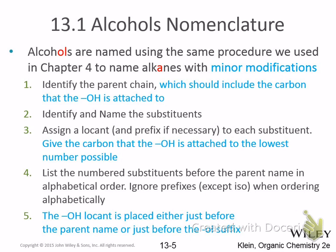The parent chain has to contain the OH functional group. Once you've identified the parent chain, you identify everything that's on it — those are the substituents. You assign a locant to each substituent, but the number that the OH group gets must be the lowest possible number on the parent chain. That determines the direction you number the parent chain. So if the OH is at position 3, counting from that end gives you hex-3-ol or 3-hexenol.